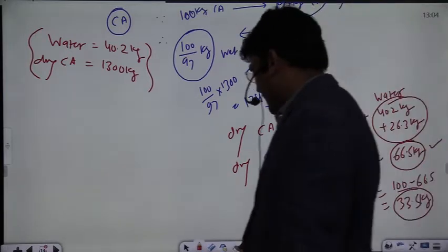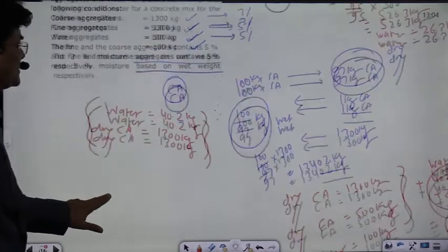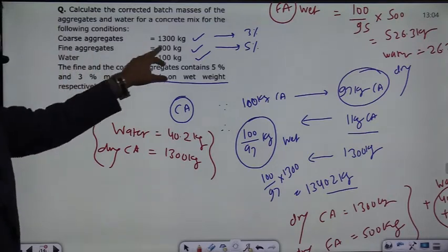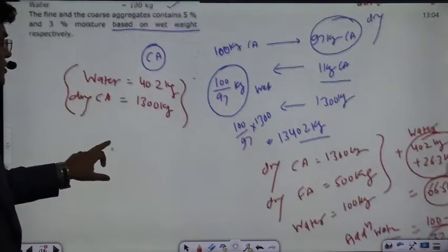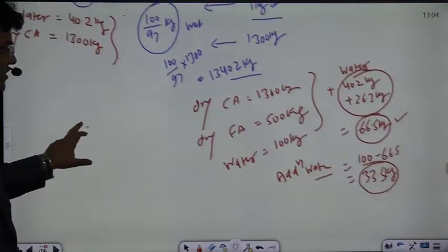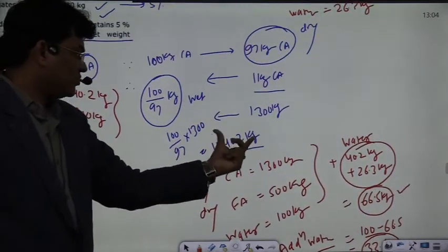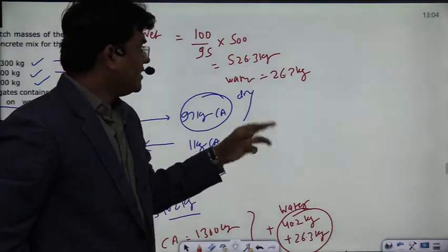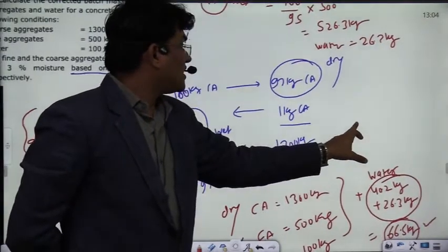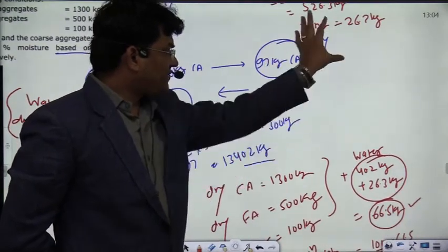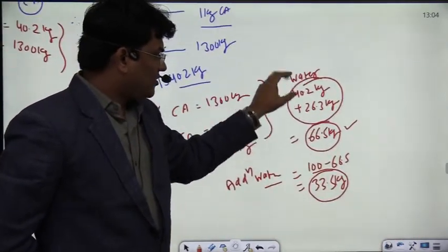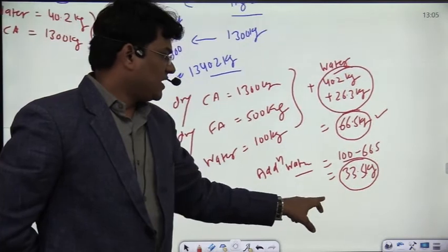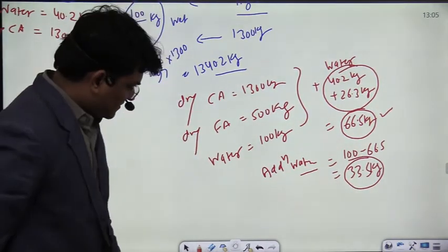So here is the final conclusion. To batch this concrete mix, you need 1300 kg coarse aggregate in dry terms and 500 kg fine aggregate in dry terms, with 100 kg total water. In practice, you must add 1340.2 kg of moist coarse aggregate, 526.3 kg of moist fine aggregate, and only 33.5 kg of additional water, since 66.5 kg of water is already present in the aggregates.